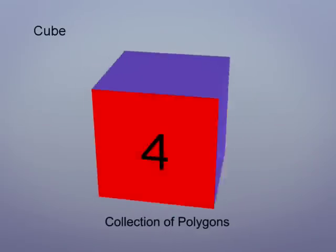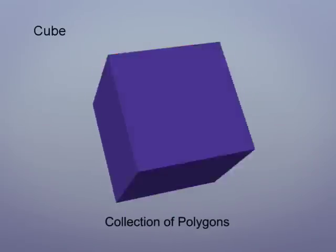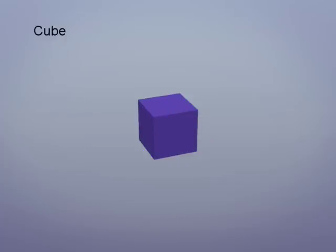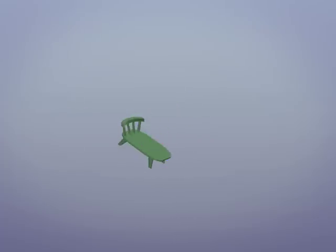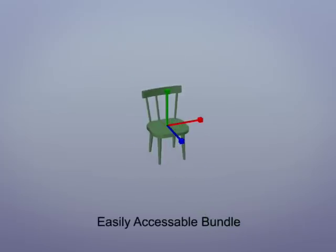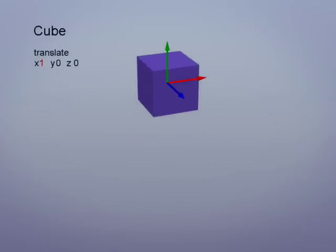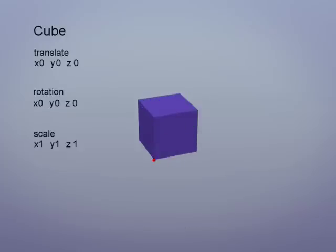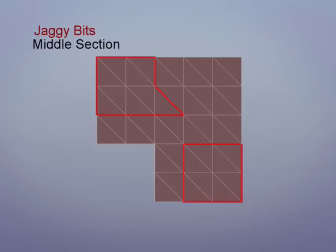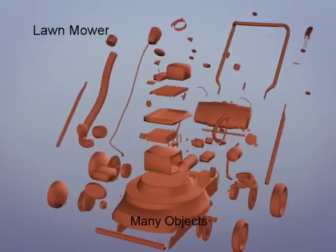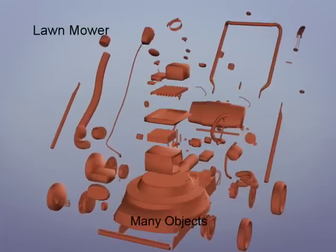Objects are collections of polygons that share transform information — their rotation, translation, and scale information. They're handy because they allow us to deal with many polygons grouped into an easily accessible bundle. In this tutorial, we'll explore objects' properties, including the pivot point. Then we'll demonstrate how any selection of polygons can make up an object. Finally, we'll show how many objects can build complicated models.